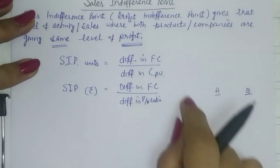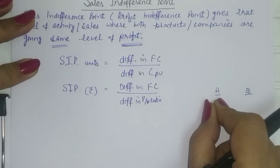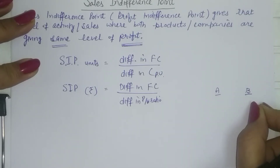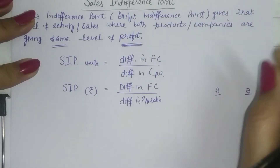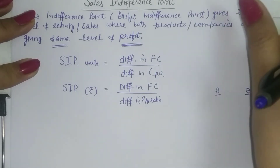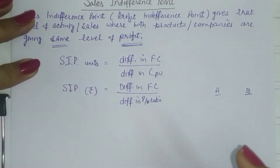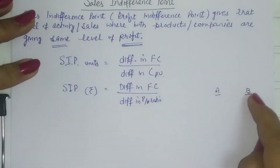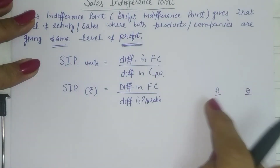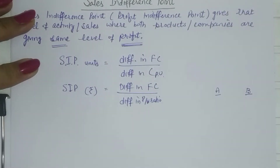Remember, we apply the appropriate tool for decision making. If we are to have a mix — that is, some units of A and some of B — then for optimum product mix we use the key factor approach. But if you are to make a choice between the two, either A or B, then we use the sales indifference point.